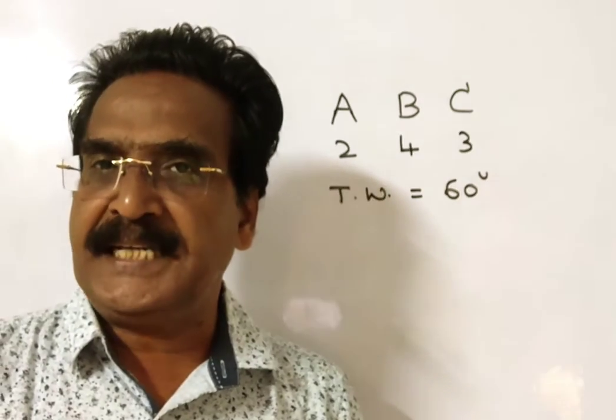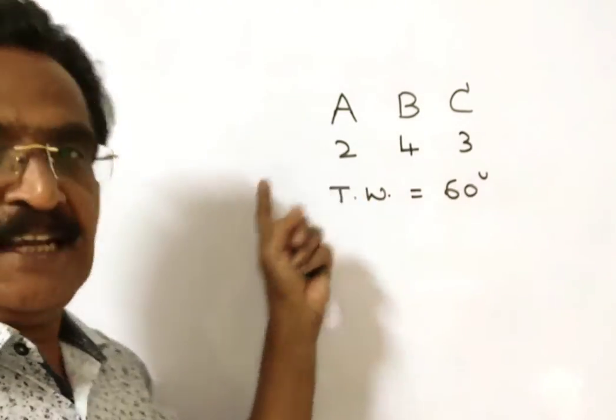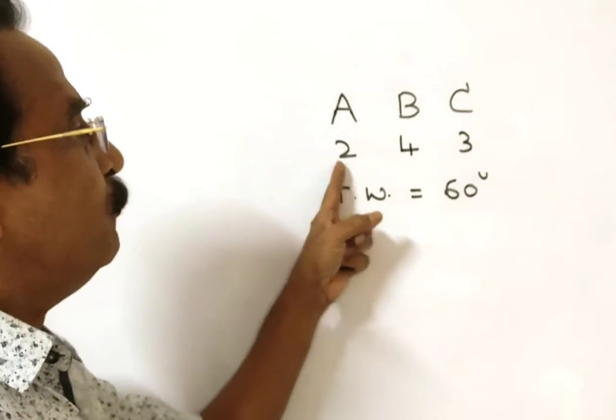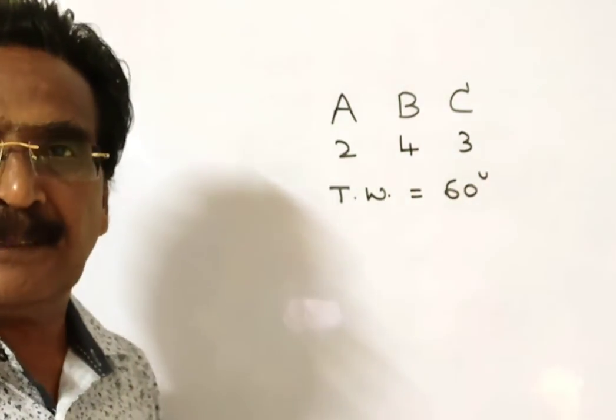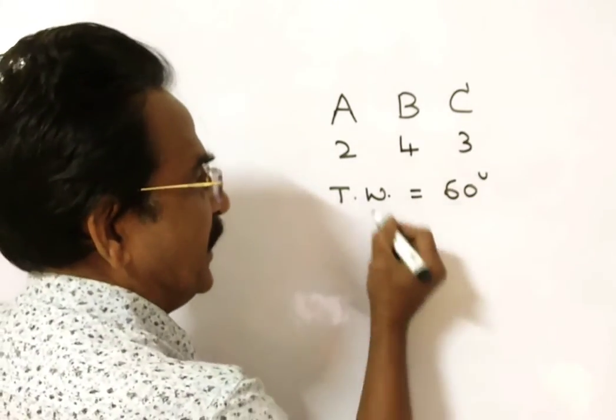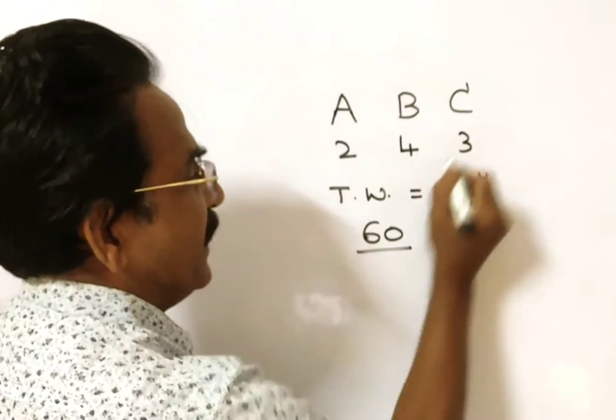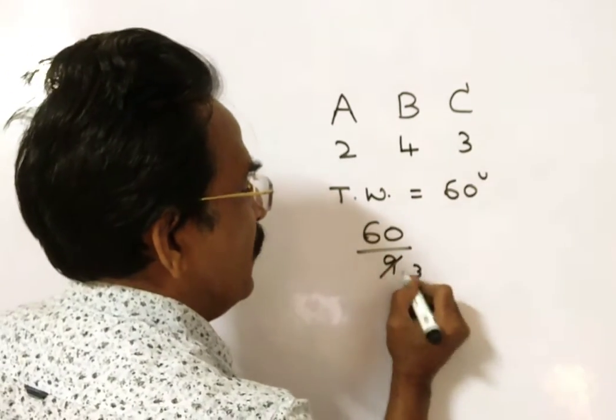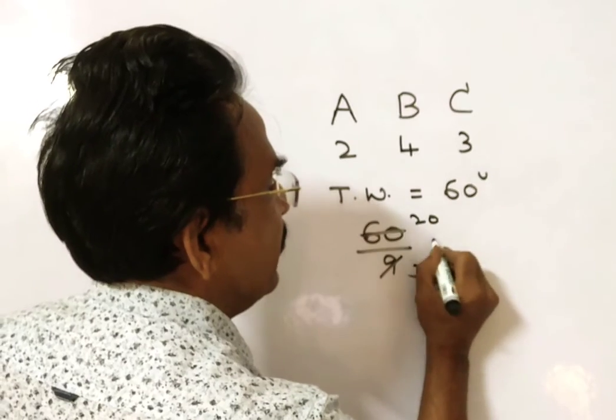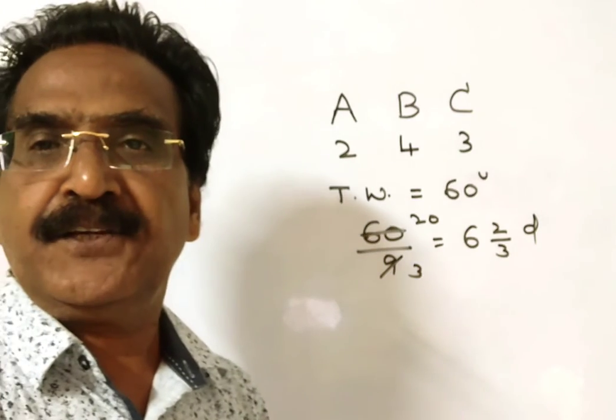Now, the question is in how many days A, B, C together can complete. Friends, if A, B, C together work, 2 plus 4 plus 3, 9 units of work per day will be completed. So A plus B plus C together can complete the 60 units of work in 60 by 9. That is equal to 20 by 3, that is equal to 6 2 by 3 days. Thank you.